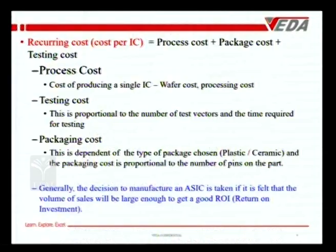The decision to manufacture an ASIC is taken by management when it is felt that the volume of sales will be large enough to yield a good ROI — return on investment. ASIC manufacturing requires millions of dollars and must be done in a fab. The ASIC manufacturing lead time — from completed design to manufactured chip — is about six to eight weeks.